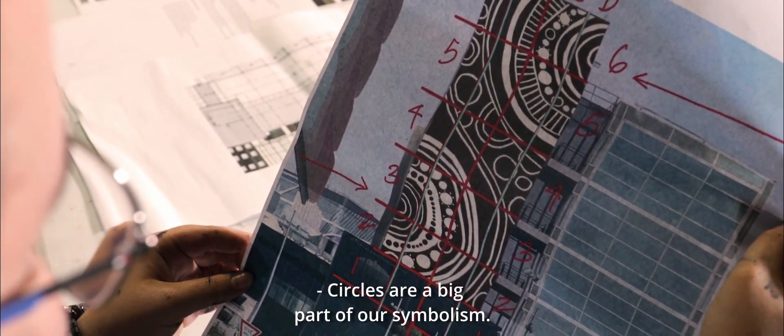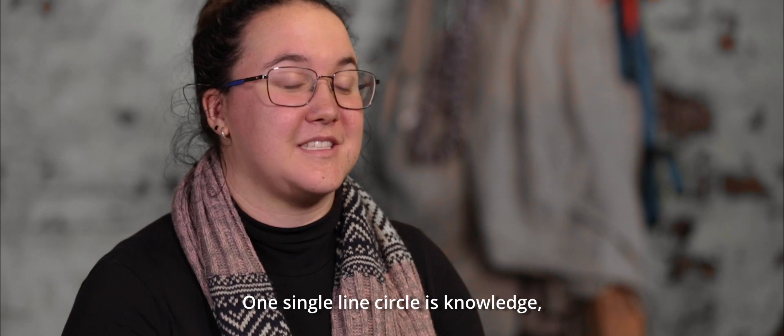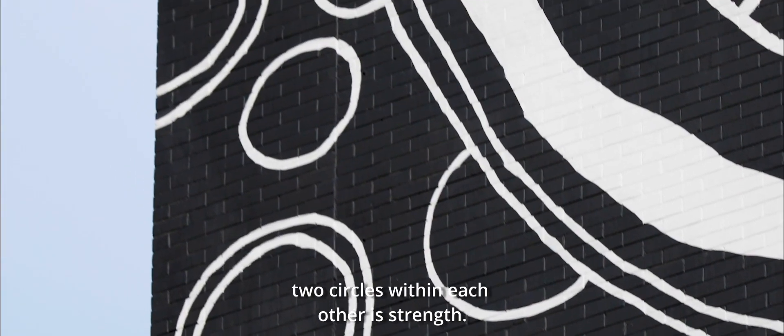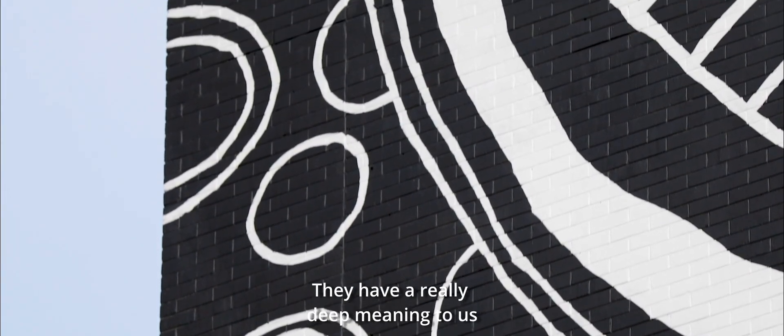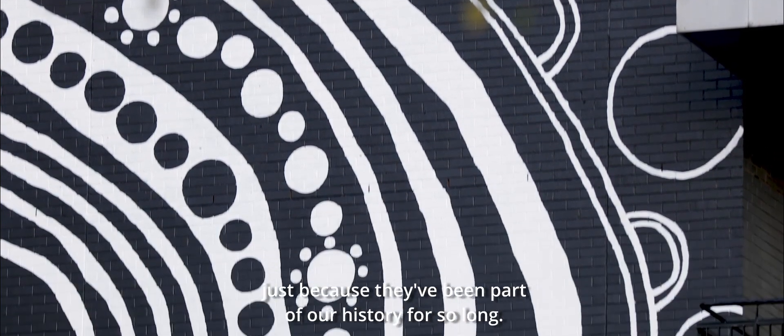Circles are a big part of our symbolism. One single line circle is knowledge. Two circles within each other is strength. They have a really deep meaning to us just because they've been part of our history for so long.